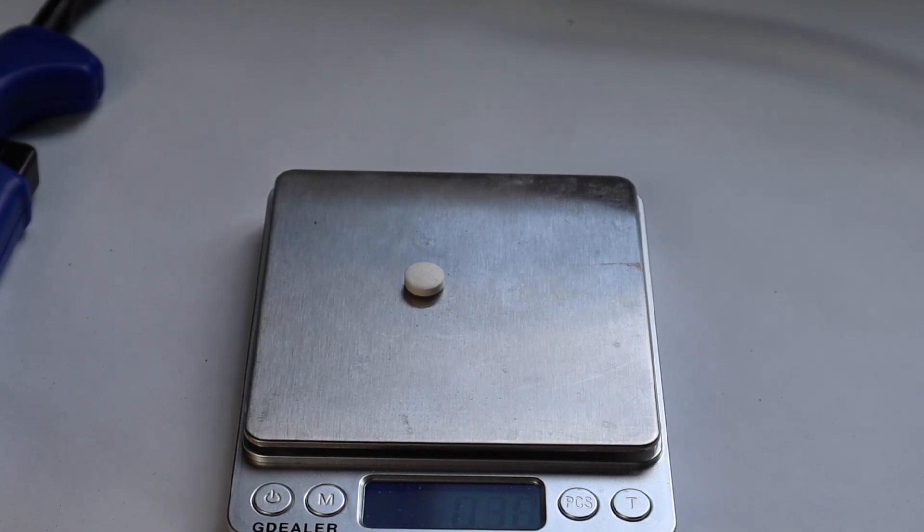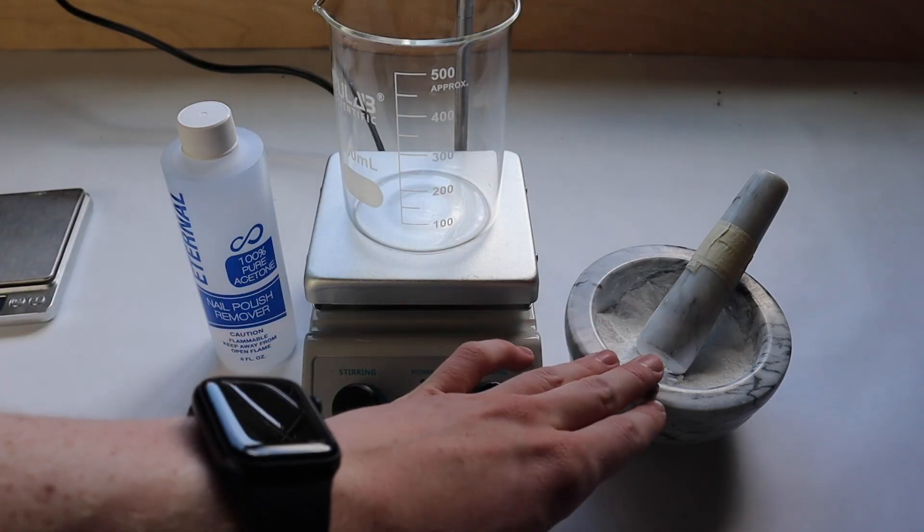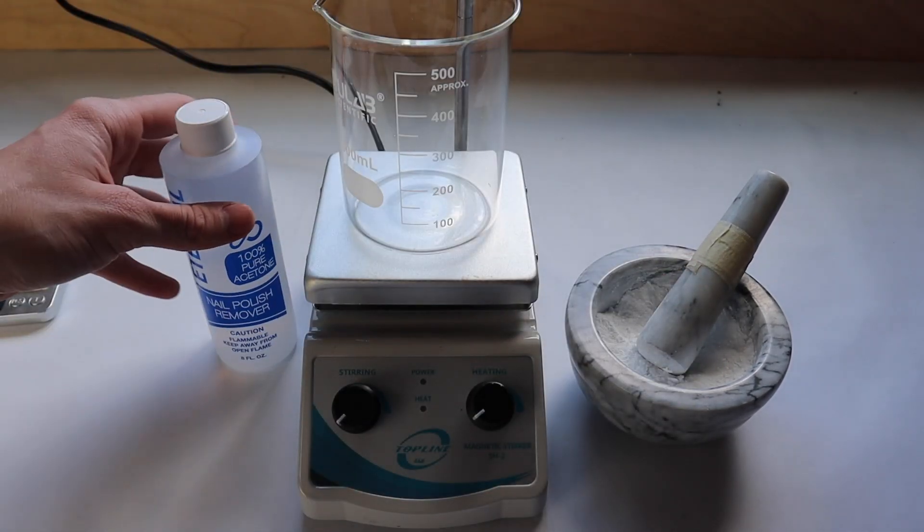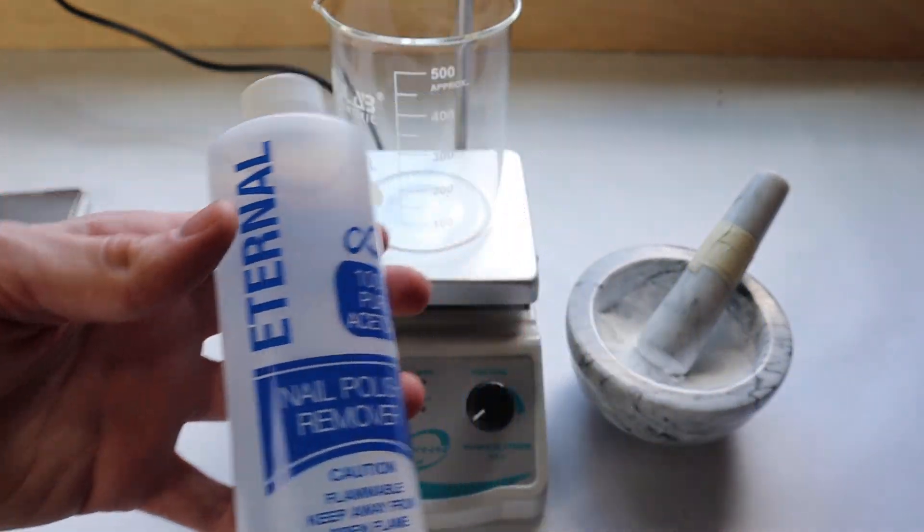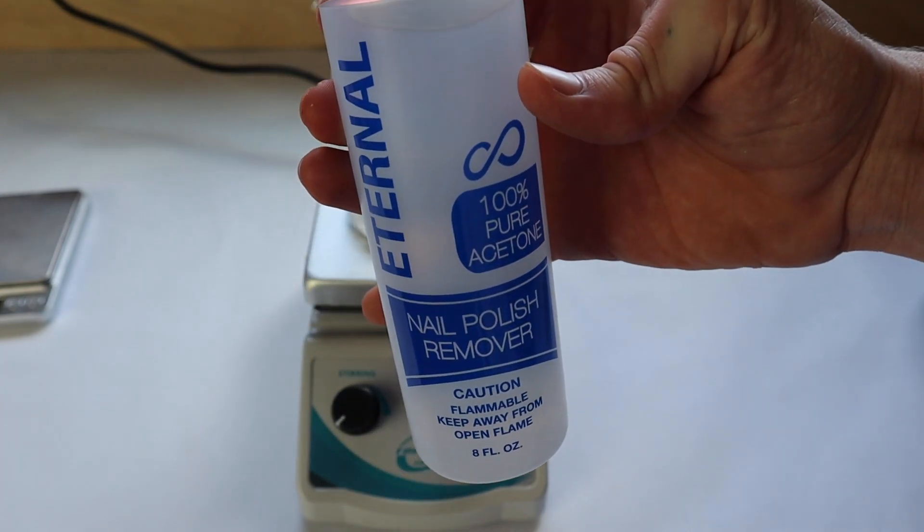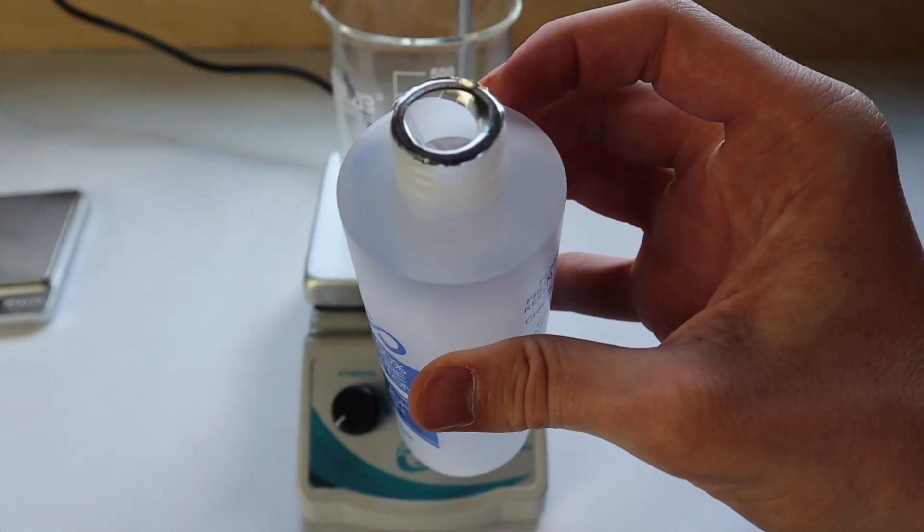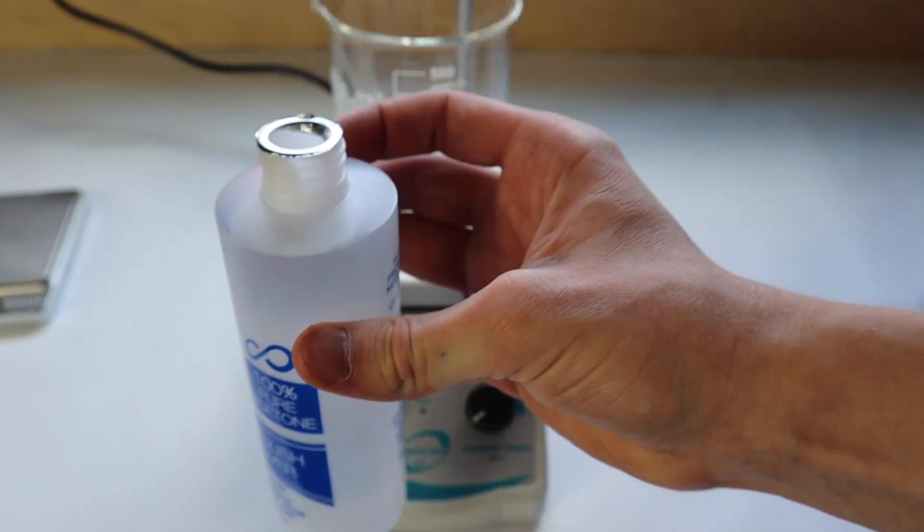The next step is to dissolve all of the acetylsalicylic acid with this acetone. This container is a little bit smaller than I expected, so that's going to make our percent yield probably worse than it should be. I never realized how light acetone really is. I know its density is a little bit less than that of water, but it just feels like it's not even half that of water.